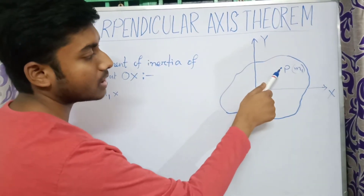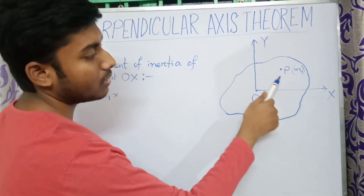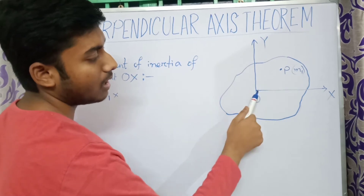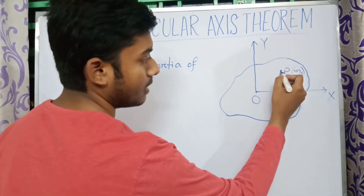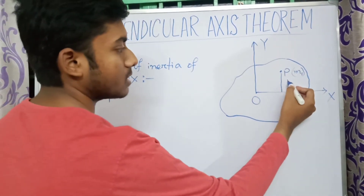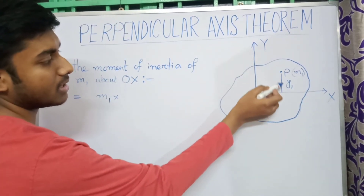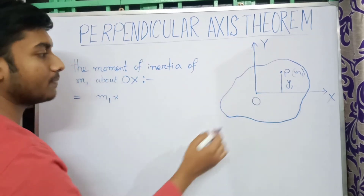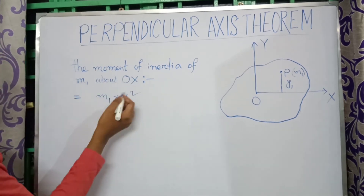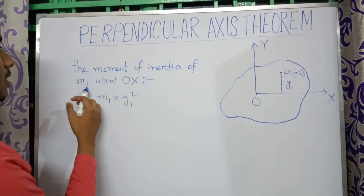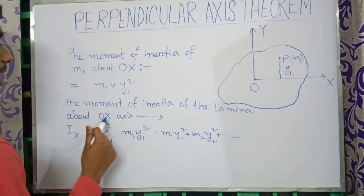We know the moment of inertia of m1 will be the mass m1 multiplied by the square of its distance from the axis of rotation Ox. Here the distance is y1, since this is the y-axis. So this will be m1·y1², which is the moment of inertia of m1 about Ox.